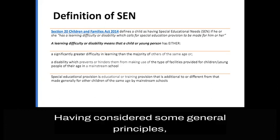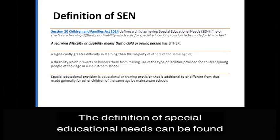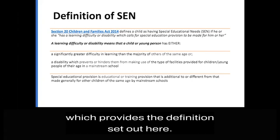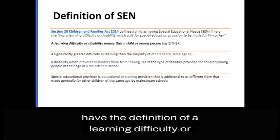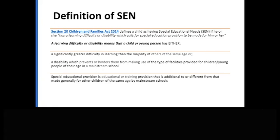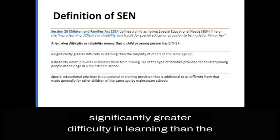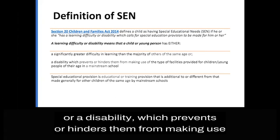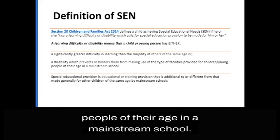Having considered some general principles, we now need to look at some more specific information about SEND. The definition of special educational needs can be found in Section 20 of the Children and Families Act. In order to understand the definition, you also need to have the definition of a learning difficulty or disability, which means that a child or young person has either a significantly greater difficulty in learning than the majority of others of the same age, or a disability which prevents or hinders them from making use of the type of facilities provided for children and young people of their age in a mainstream school.